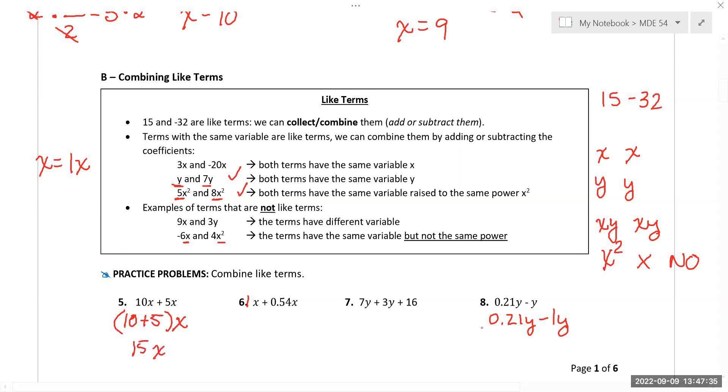So that's 15x. This one would be 1 plus 0.54x—don't forget that one. For this one, the y's are like terms, but the number is not. When I combine it, 7 apples plus 3 apples is 10 apples, and the 16 just stays. This one is 0.21 minus 1, which is negative 0.79y. It's okay that it's negative.